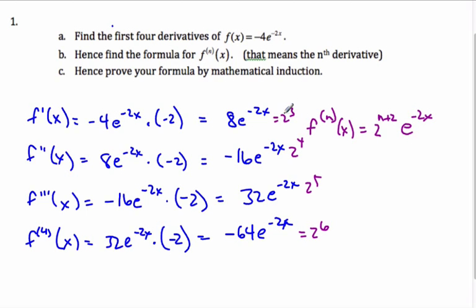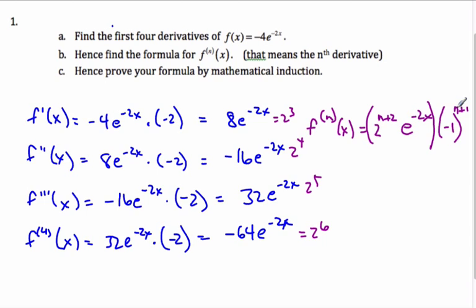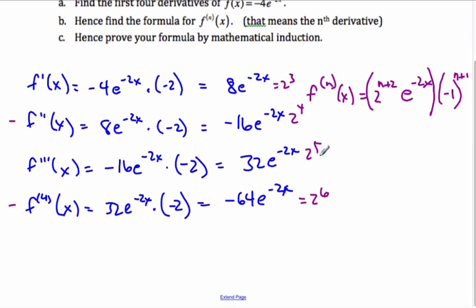If the first derivative means n is 1, I want the exponent to be 3, which is 1 plus 2 — that checks out. Now I haven't dealt with the alternating plus, minus, plus, minus signs. To handle that, I'll multiply by negative 1 to some power. I want odd derivatives to be positive and even derivatives to be negative. So I use negative 1 to the n plus 1: if n is even, n plus 1 is odd, making it negative. That handles the sign. Here's my conjecture for the nth derivative.